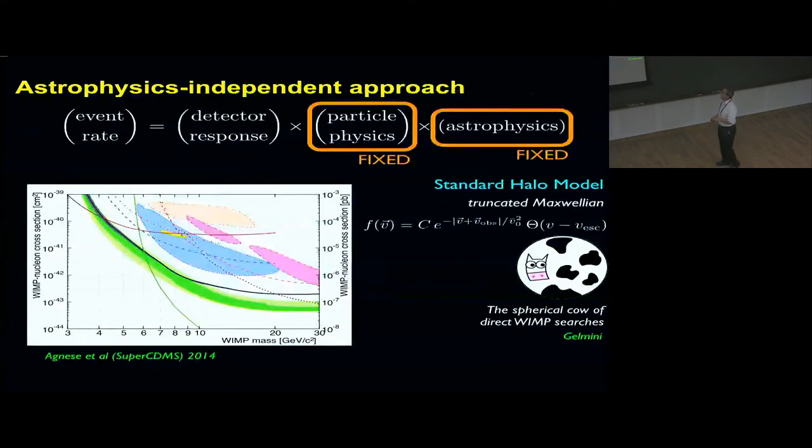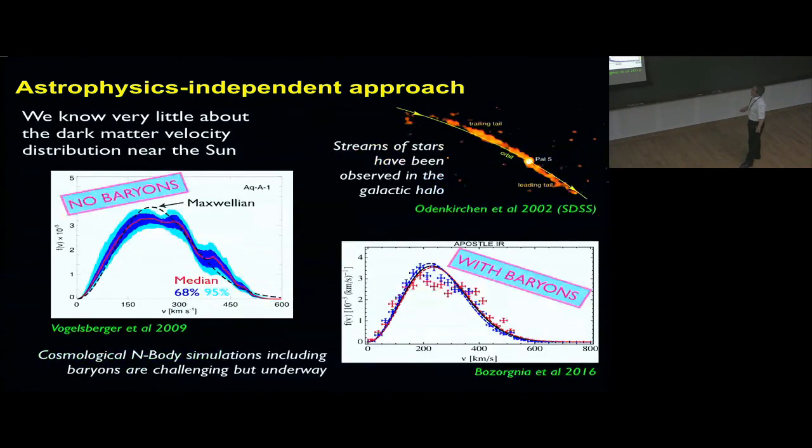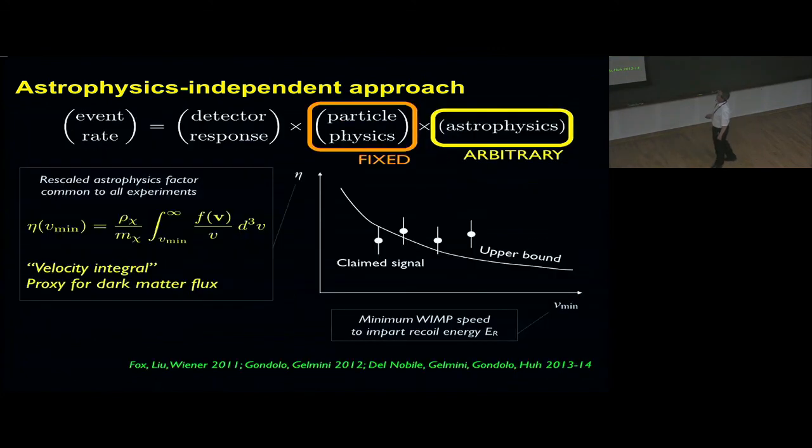For astrophysics-independent methods, the idea is that in these limit plots, the astrophysics and the particle physics are fixed—the astrophysics to the standard model, which is maybe spherical cow, direct wind searches. But we don't know much about the velocity distribution despite simulations. The idea was to leave the astrophysics arbitrary and use the dark matter flux or a proxy for the dark matter flux called the velocity integral given by this integral over the velocity distribution. On one axis as a function of its natural variable, which is the integration limit, upper bounds appear as regions excluded above the line, and claimed signals as points.